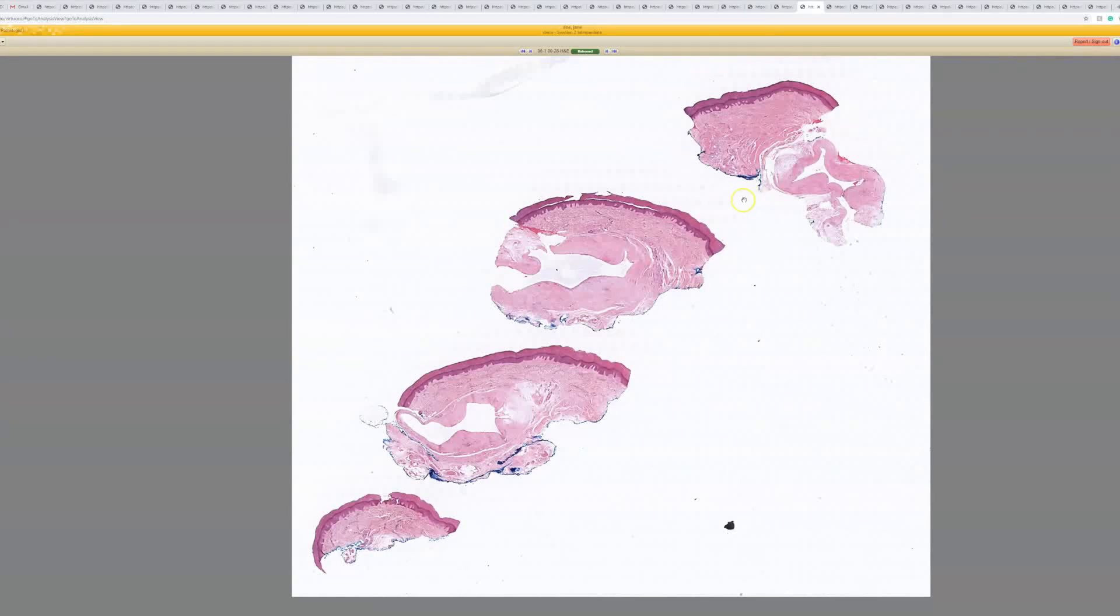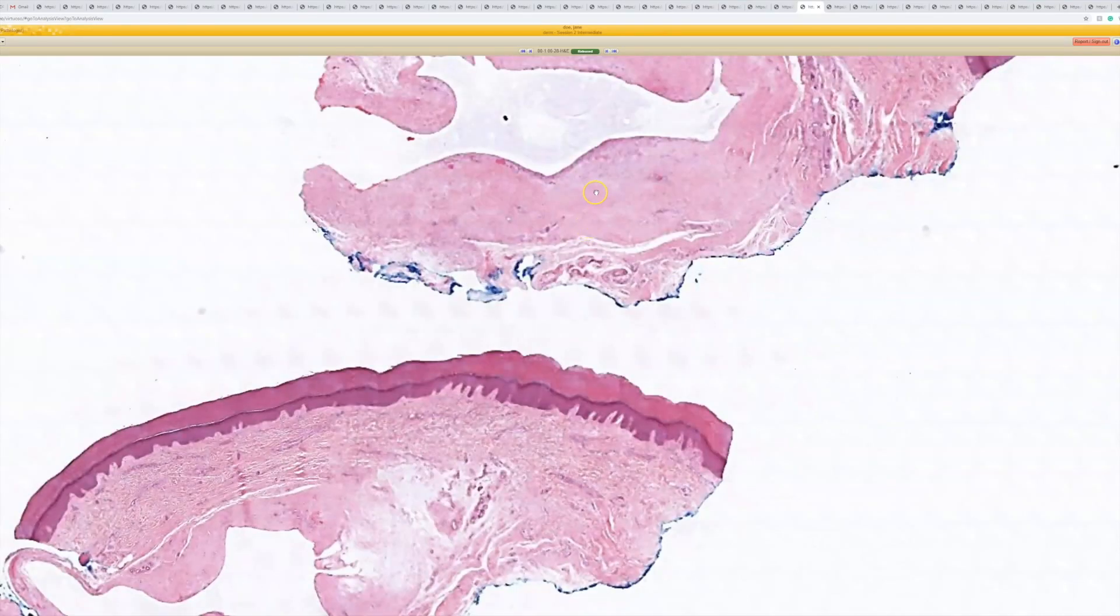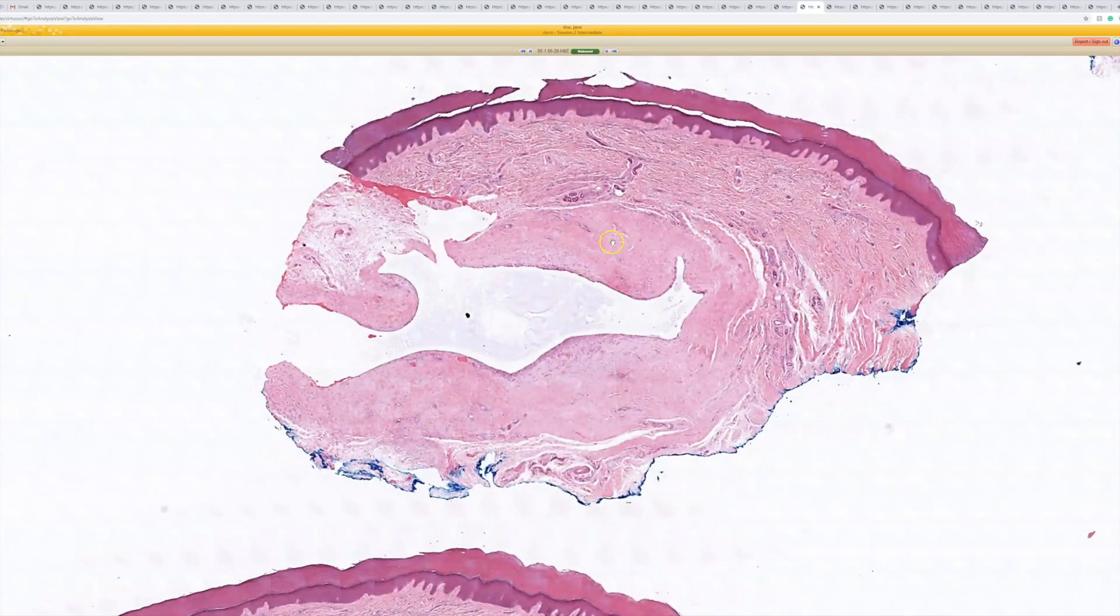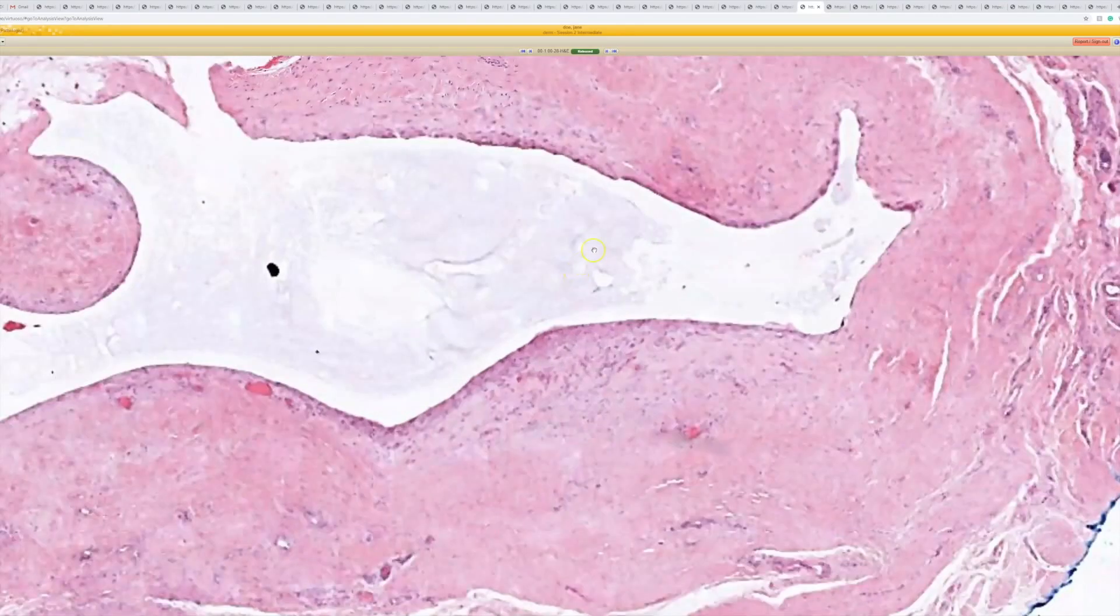This is case 28. We're on an acral site and there's a cyst in the dermis, or maybe a pseudocyst actually. No true lining, so this is consistent with a digital mucous cyst.